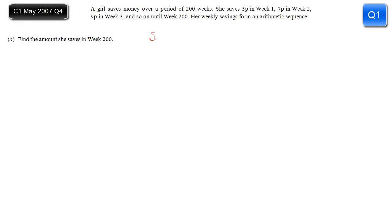In this question we have a girl who's saving money each week in increasing amounts: five pence in week one, seven pence in week two, nine pence in week three, and so on. So we have a sequence here: five, seven, nine, eleven, and so on, increasing by two each time, and therefore we can recognize that this is an arithmetic series.